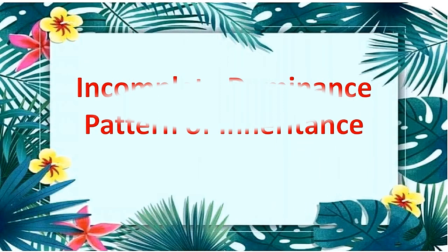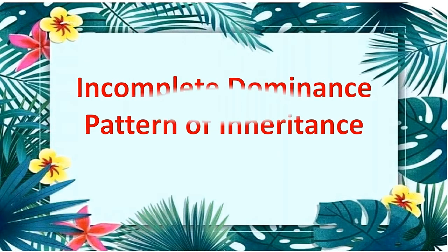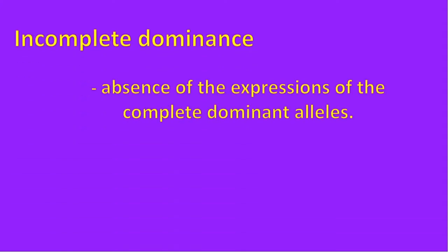and answer genetic problems related to incomplete dominance pattern of inheritance using Punnett square. When we say incomplete dominance, there is an absence of the expressions of the complete dominant alleles.